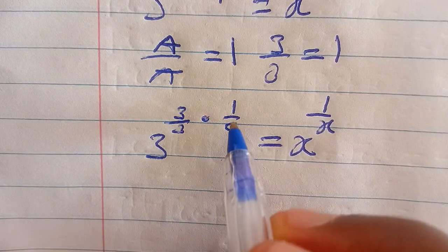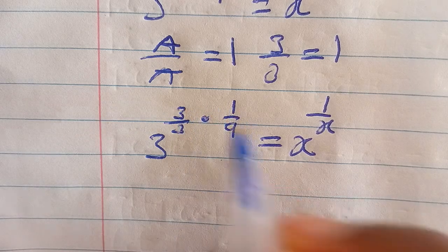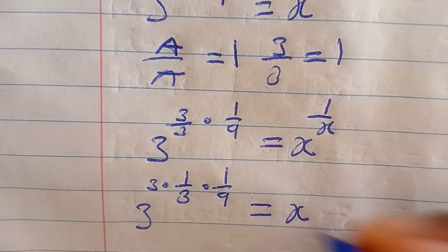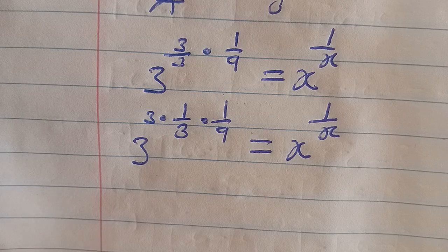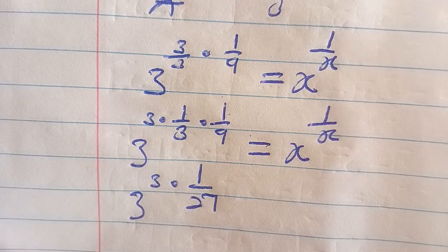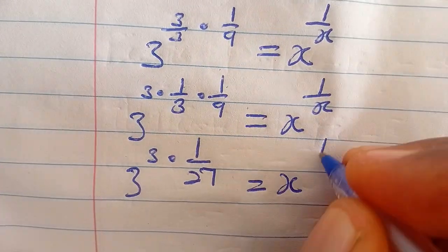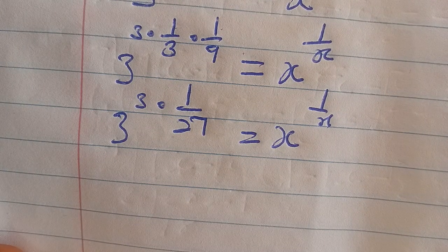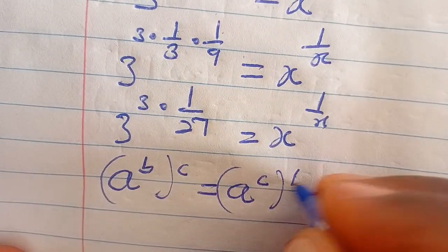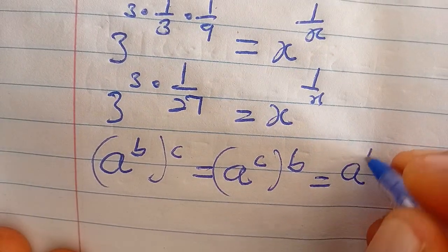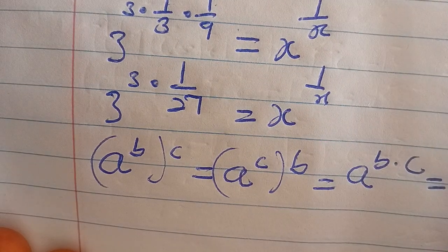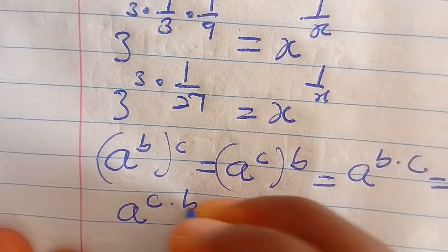So we are going to have 3 exponent 3 multiplying 1 over 27, which equals x exponent 1 over x. Now let's introduce a rule of indices here: if you have a exponent b multiplying c, this is the same as a exponent c multiplying b. Applying this concept here, this exponent 3 is multiplied by 1 over 27.